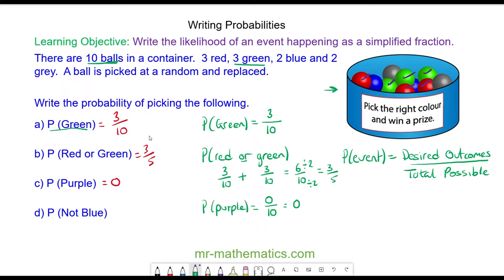And the next one, the probability of not blue. Well, we know it is certain we will pick a ball, which is 10 out of 10. The number of blue balls - there are 2 blue balls - so if we have all of them, take away the 2 blue, this is 8/10. And again, we can simplify this fraction by dividing both by 2.